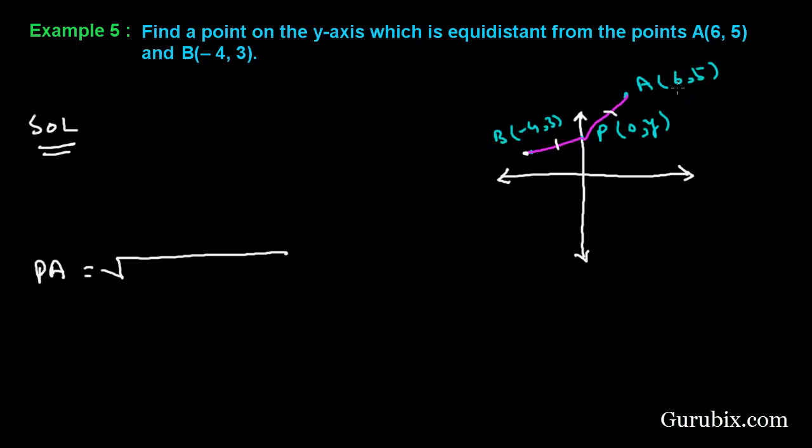Then it will be square root of (6 - 0)² + (5 - y)². If we further solve it, then it will be square root of 36 + 25 + y² - 10y. It will be √(61 - 10y + y²).